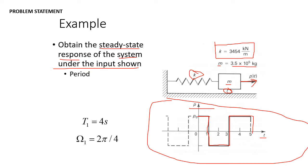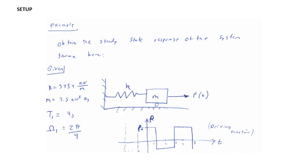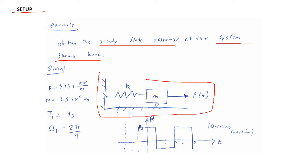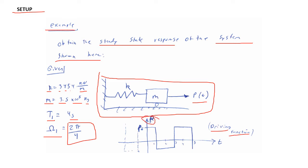Our ω₁ is given as 2π/4. With the given information from our problem statement, we now create our setup page. We redraw the system with mass, spring, and external load p(t). So k = 3,454 kN/m, mass = 3.5×10⁵ kg, period T₁ = 4 seconds, ω₁ = 2π/4, and we have our driving function p versus t plot.